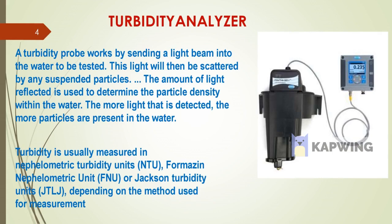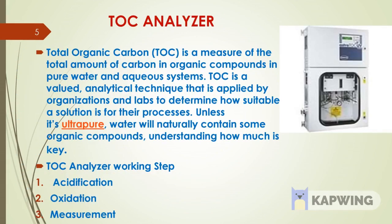Turbidity is basically measured in NTU, FNU, and JTU — nephelometric turbidity unit, or Jackson turbidity unit. Now, for the TOC analyzer: TOC stands for total organic carbon.